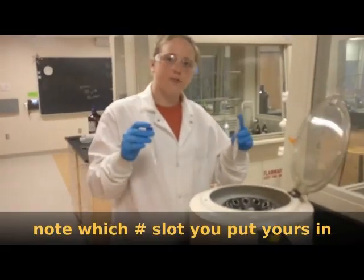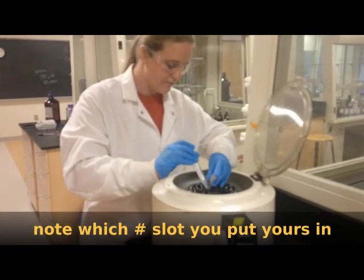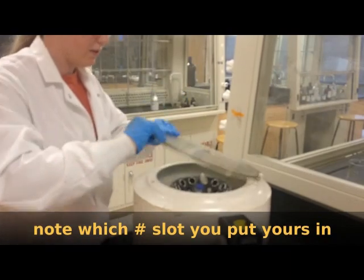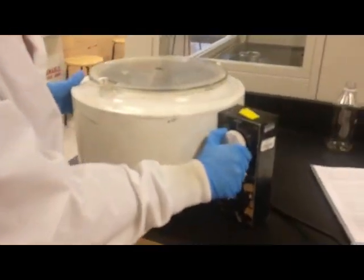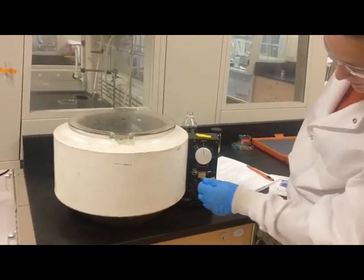You put this in the centrifuge. You want to make sure your balanced tubes are opposite sides of each other. Close the lid. We're going to set our timer. To stop the centrifuge, you hit this break button.